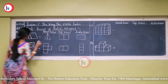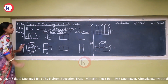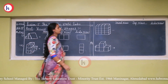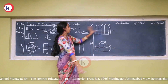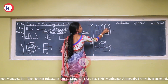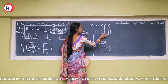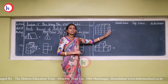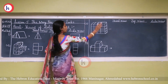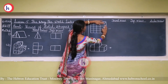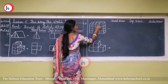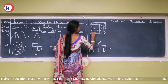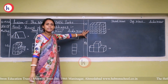Now look at this figure. There are 1 through 16 cubes altogether. Whenever we draw the front view, we count: 1, 2, 3, 4 across and 1, 2, 3, 4 rows — so we can see 16 squares from the front view.